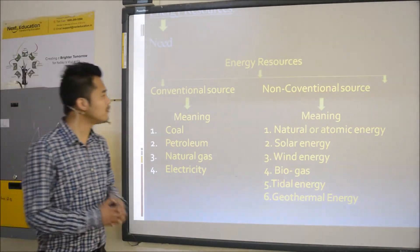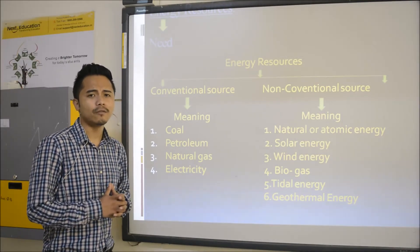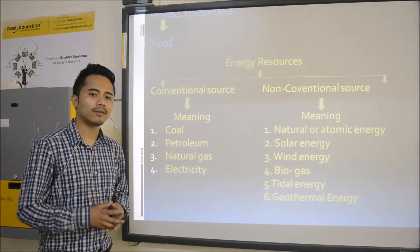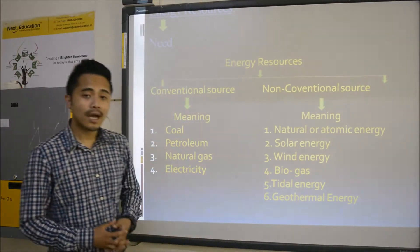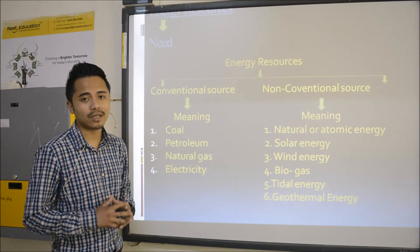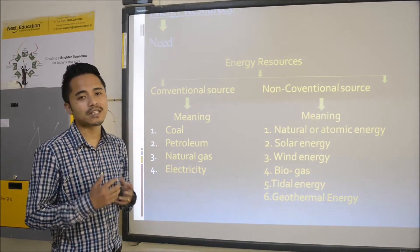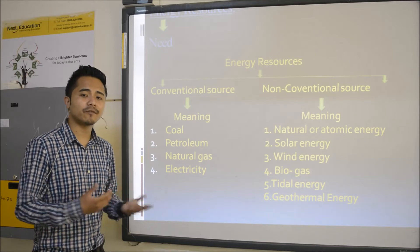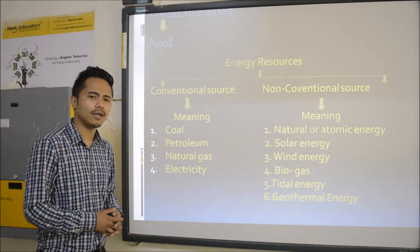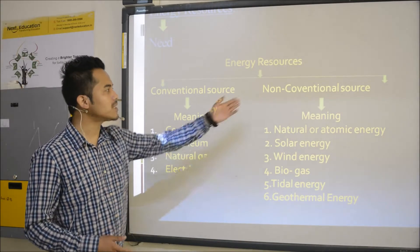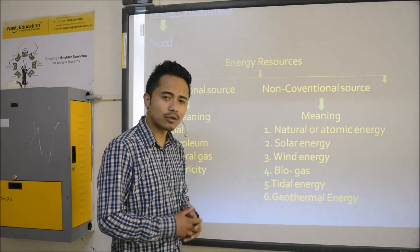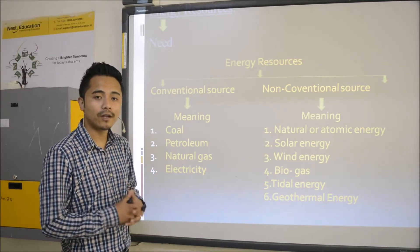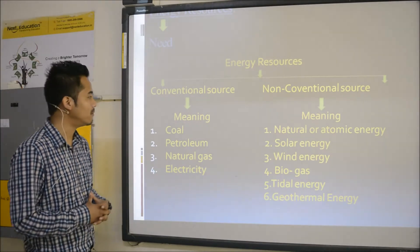Conventional sources are those energy resources which we've been using from the past years. Non-conventional resource sources are those resources which we are using recently, or whose discovery has been done recently. Conventional resources are those which cannot be renewed and are not friendly to the environment. Non-conventional resources are those which can be renewed and are friendly to the environment — they do not destroy the environment.